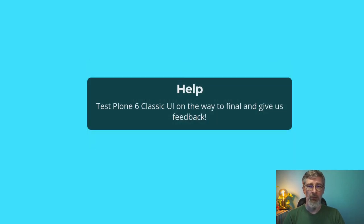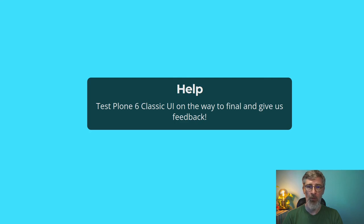It would be great to get some feedback from you. Plone 6 Alpha 4 is already out and brings most of these improvements. Things like responsive image support are still in development and will be in one of the next releases. But all the resource registry, Mockup cleanup, Bootstrap, toolbar improvements, and icons — that's all there. Help us test Plone 6 Classic UI and of course Volto. Try it out and give us feedback so that when Plone 6 Final comes out, we have everything sorted out.